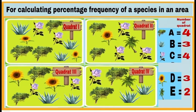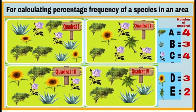Next, for calculating percentage frequency of a species, note down the number of quadrats where each plant species is found. Species A is present in all four quadrats, so its value is 4. Species B is present in three quadrats — in quadrats 1, 3, and 4; absent in quadrat 2, so its value is 3. Species C is present in all four quadrats, value is 4. Species D is present in three quadrats — quadrats 1, 2, and 3; absent in quadrat 4, so value is 3. Species E is present in only two quadrats — quadrats 2 and 4; absent in quadrats 1 and 3, so value is 2.